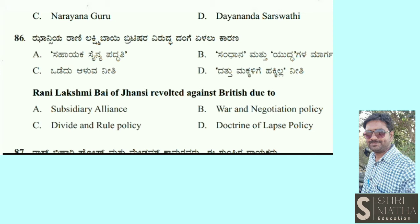Next question: Rani Lakshmibai of Jhansi revolted against the British due to — subsidiary alliance, war and negotiation, divide and rule policy, or doctrine of lapse policy? The answer is doctrine of lapse policy. The British tried to capture the kingdom of Jhansi under this doctrine, which is why Rani Lakshmibai revolted and fought against the British. Subsidiary alliance was implemented by Lord Wellesley.